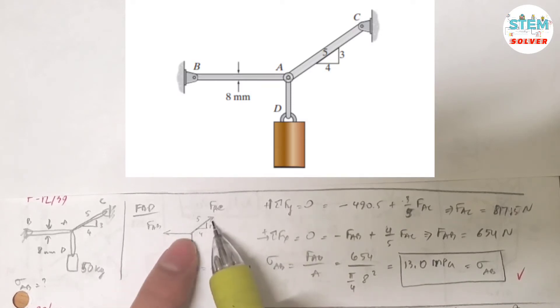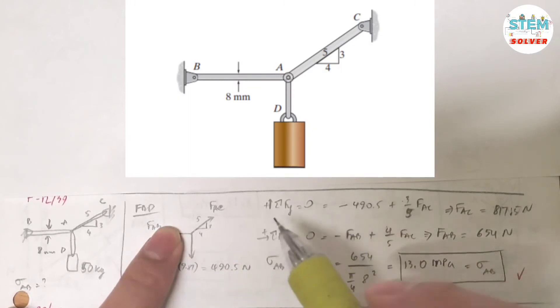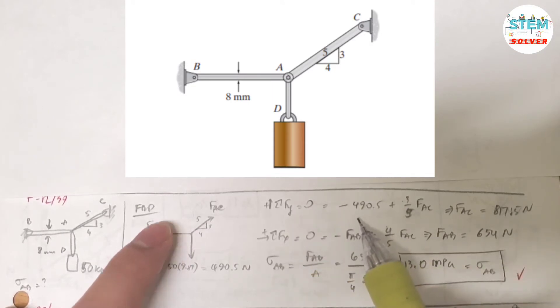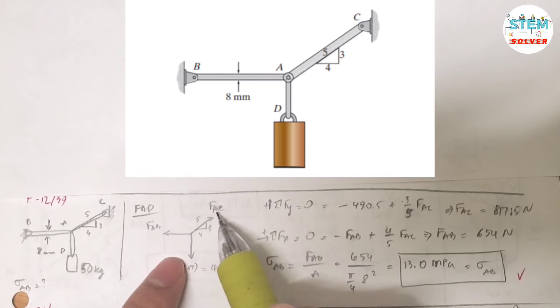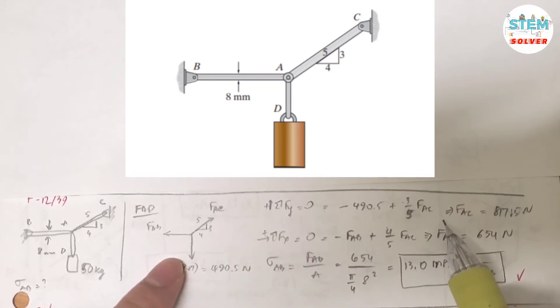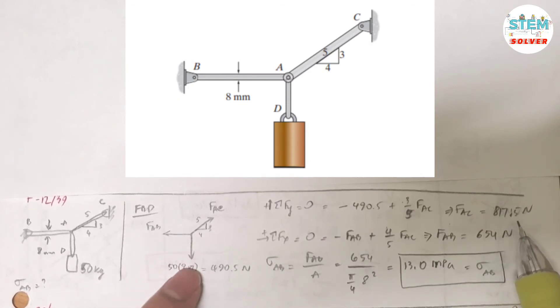For AC, you can break it down into the X and Y components. If I sum the forces in the Y direction and set it equal to zero, I have negative 490.45 plus 3 over 5 times FAC equals zero. Because we are in equilibrium, I found FAC equals 817.45 N.